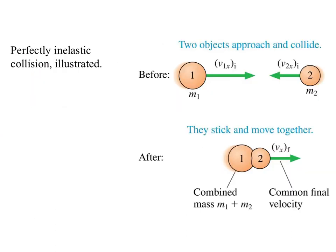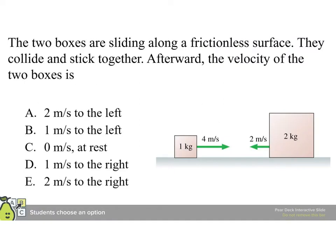This is what we mean by perfectly inelastic collision. Nothing particularly special. It's exactly what it sounds like. They're moving at each other beforehand. They stick and they move off. Because of it, you can treat them as a combined mass of M1 plus M2, which can be useful sometimes. For instance, these two boxes are sliding along a frictionless surface. They collide and stick together. Afterward, find the velocity of the two boxes.